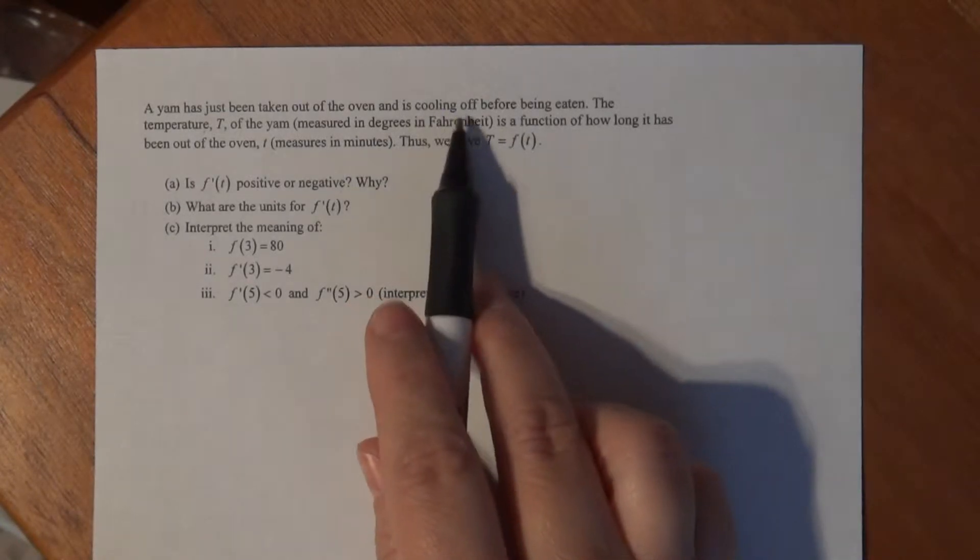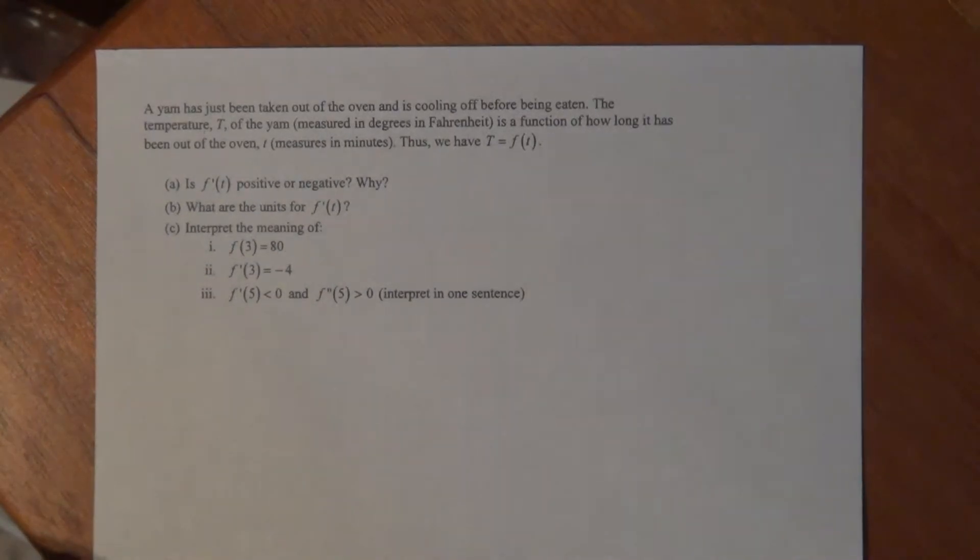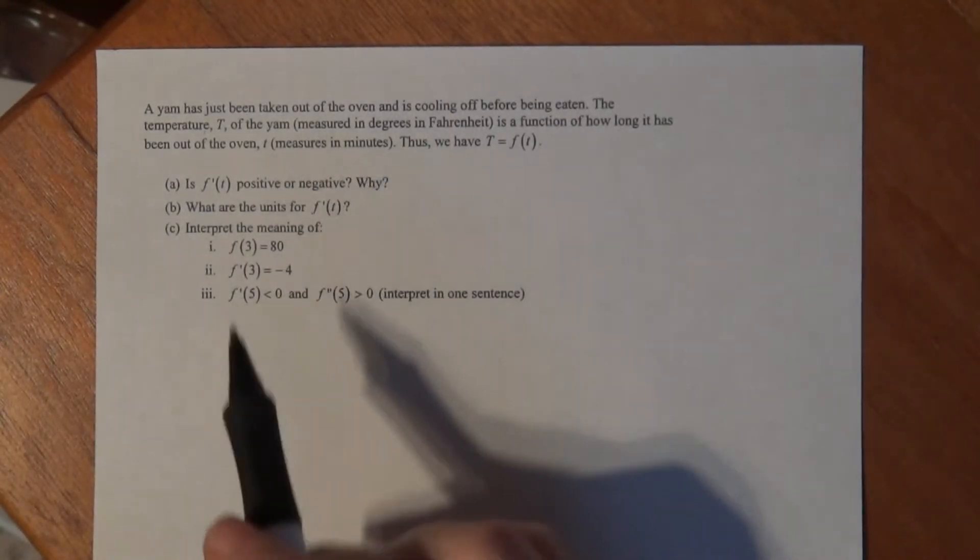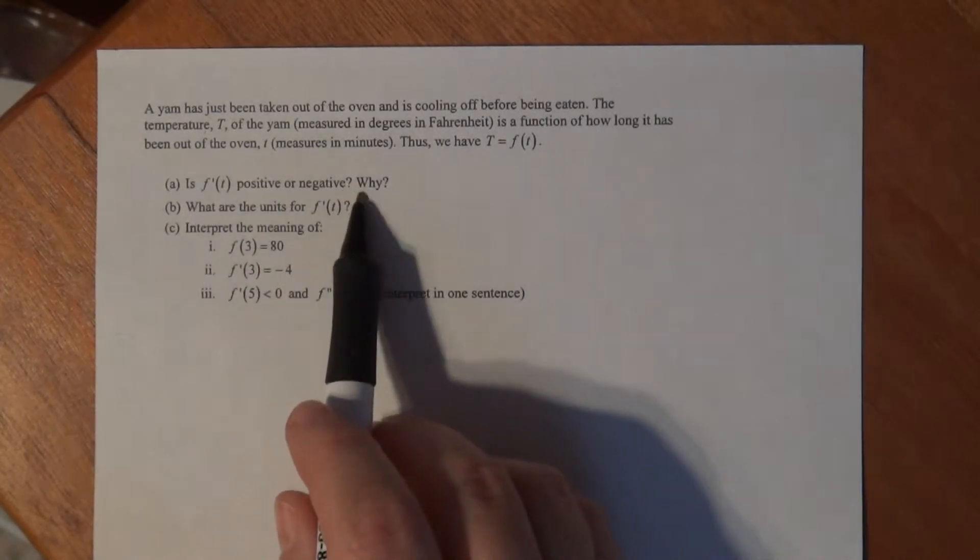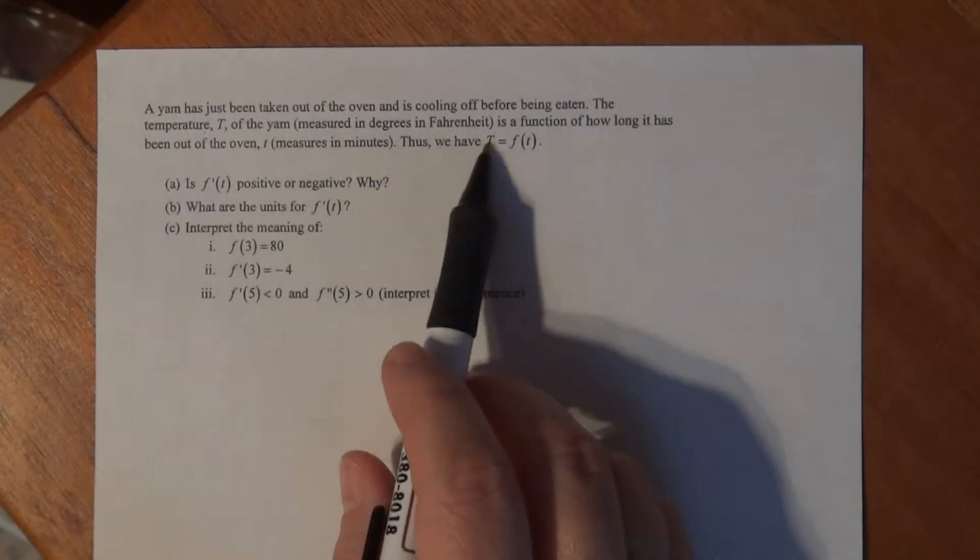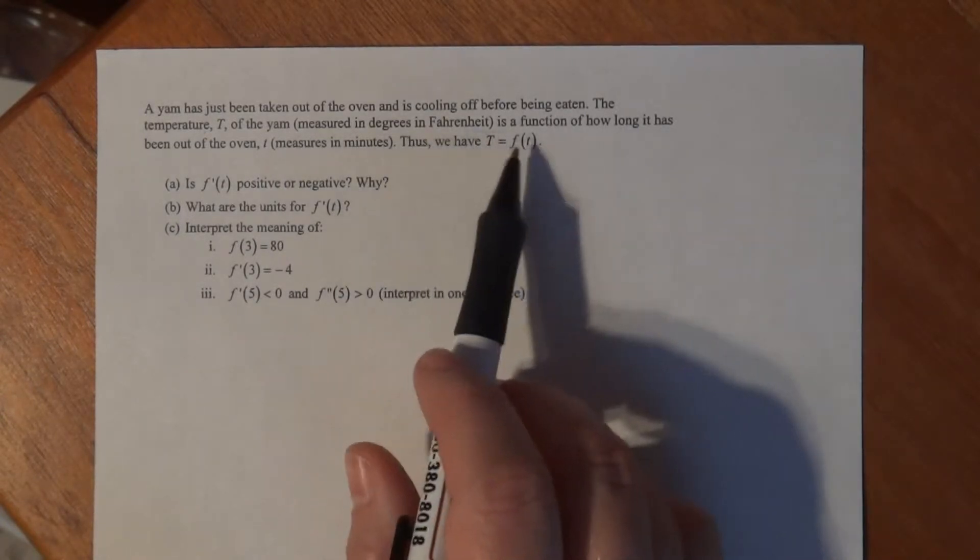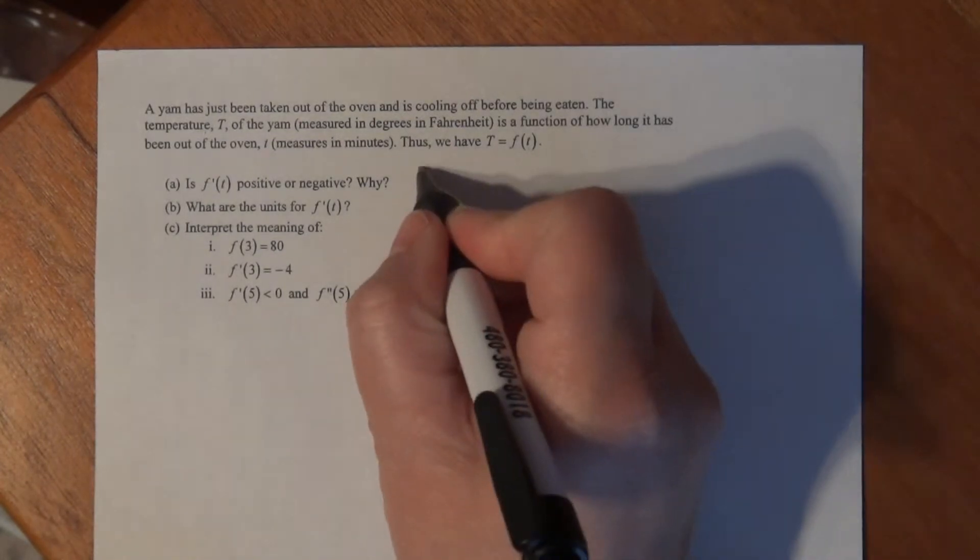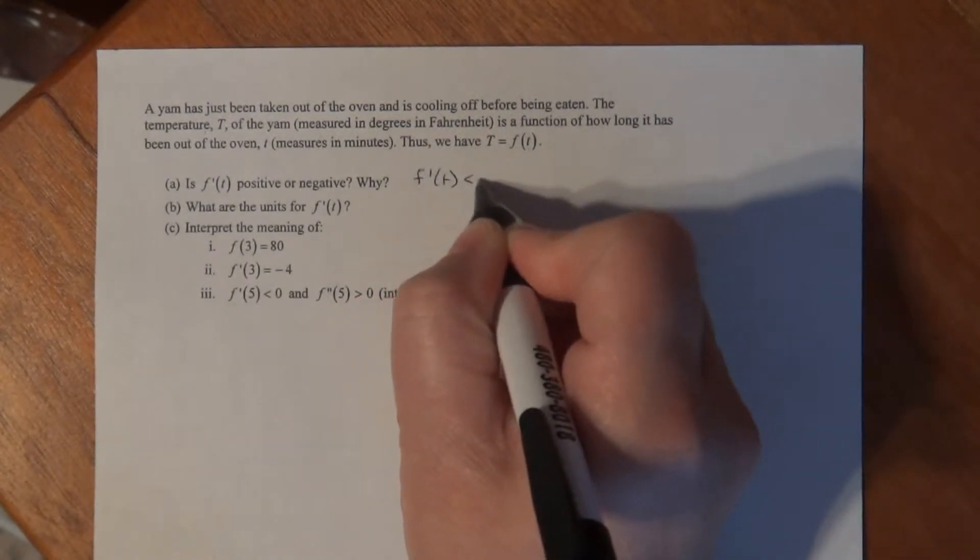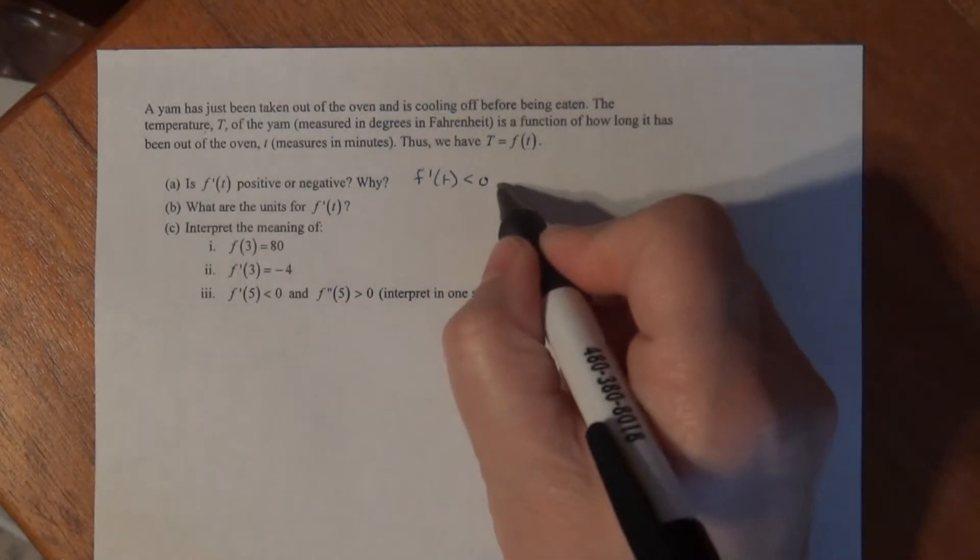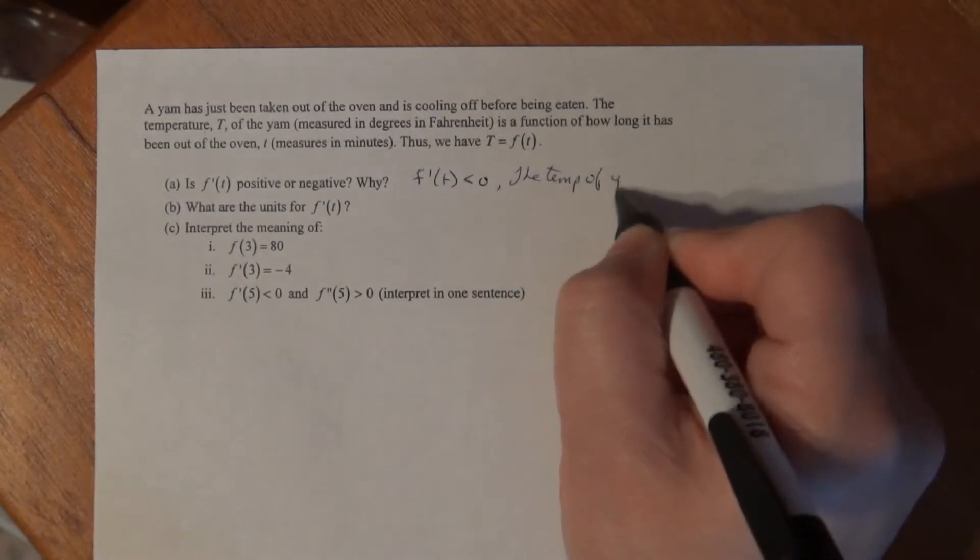The idea of cooling: F of t is decreasing for every minute the yam's been in the room. So the question is, is F prime of t positive or negative and why? Since F of t is decreasing as time passes, the temperature of the yam is decreasing. That means F prime of t has to be negative, simply because the temperature of the yam is decreasing.